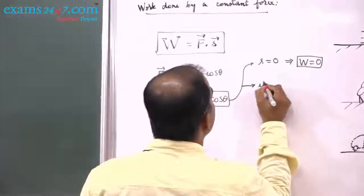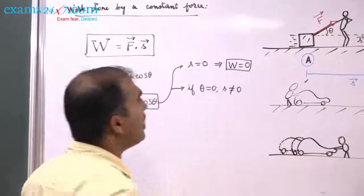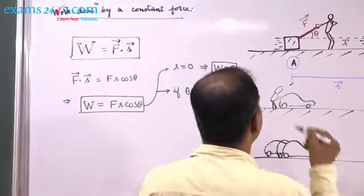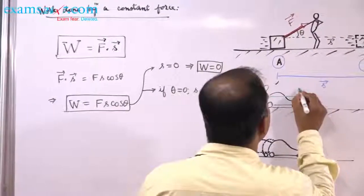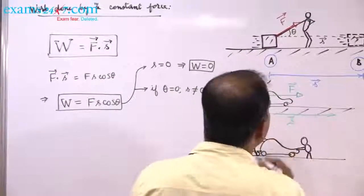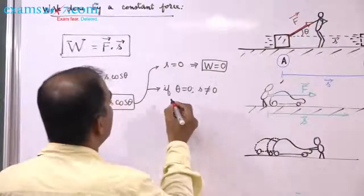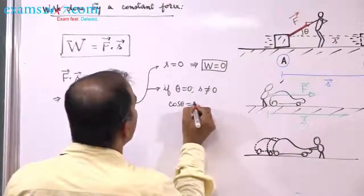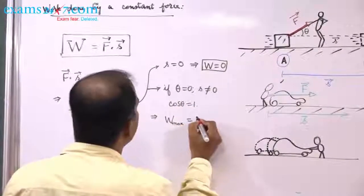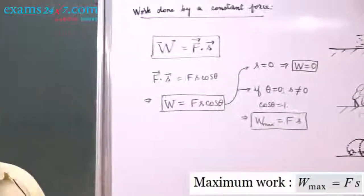Next, if θ equals zero but S is not equal to zero — displacement is there and the direction of force and direction of displacement are the same — then cosθ becomes one and therefore work done will be maximum. Maximum work done is simply the magnitude of the force times the magnitude of the displacement.